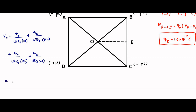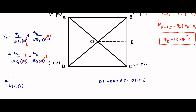Here we can take 1 by 4π ε₀ common. Another interesting thing: since it is a square and O is the center point, OA is equal to OB is equal to OC is equal to OD — let us call it L. So all of these distances equal L, and we can take 1 by 4π ε₀ L common. This gives us 1 by 4π ε₀ L, where OA equals OB equals OC equals OD equals L.